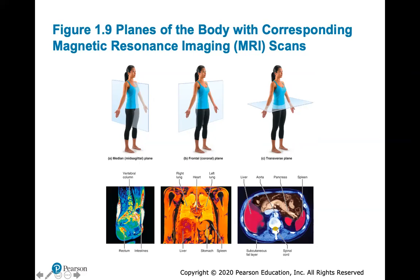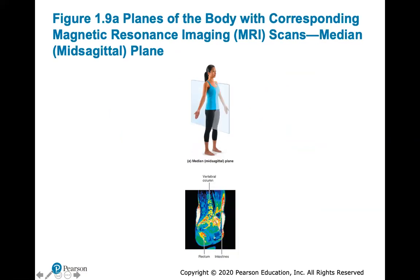The frontal or coronal plane separates the body into a front and back half — cut this way, you would see the lungs, heart, liver, stomach, intestines, and spleen. The transverse section separates the patient into top and bottom, allowing you to see organs such as the liver, aorta, pancreas, and spleen from an inferior or posterior view. These planes of the body are important because they give a great look at the inside from different points of view, which is helpful for diagnosing disease.